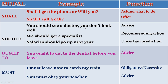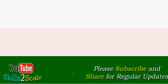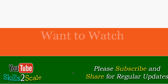Then should. 'You should see a doctor because you don't look well' — that's advice. 'We should get a specialist' — that's a recommending action. 'Salaries should go up next year' — an uncertain prediction. Must and should: must means compulsion, obligatory necessity. Should gives more emphasis on advice. Ought to: 'You ought to go to the dentist before you leave' — that's advice. 'I must leave now to catch my train' and 'You must obey your teacher' — that's obligation and necessity. Practice all these sentences and keep listening. Practice as and when you get an opportunity.